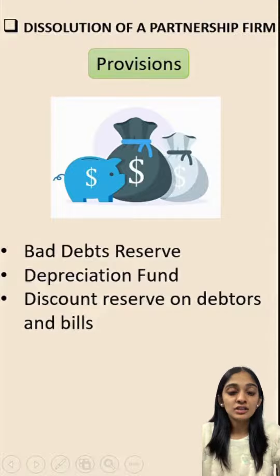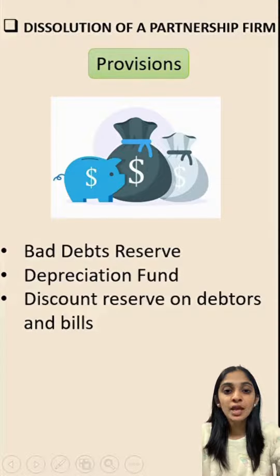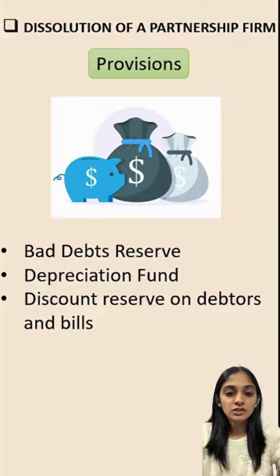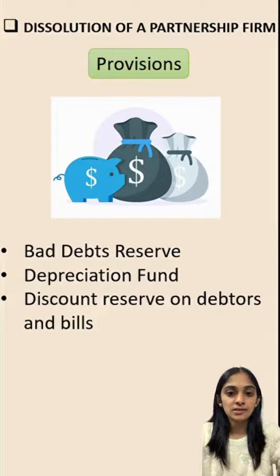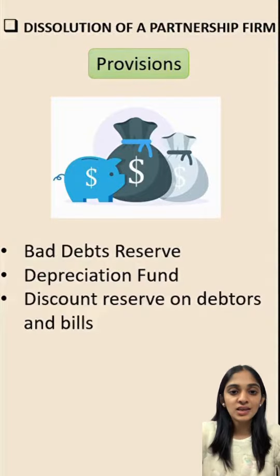In this way, all the assets and liabilities of Eat and Sip — that is, Eva and Ethan's old firm — will be disposed of. All the reserves will be distributed among the partners and all the provisions will be written in the Realization Account. In the further video, we'll be learning how the journal entry is passed using the Realization Account. Thank you.